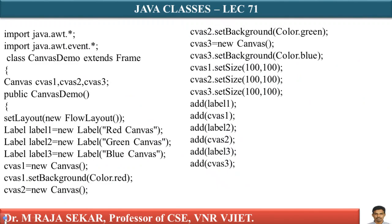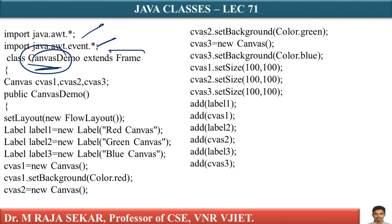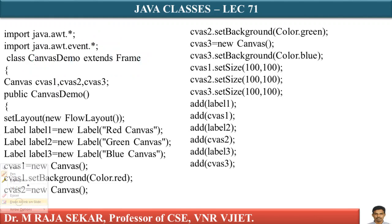Just see — this is the same thing we discussed. These are different packages. This is the class; my class name is CanvasDemo. Here I am not implementing any listeners, unlike my previous program where we implemented a listener. I am creating three canvases: CAVS1, CAVS2, and CAVS3.